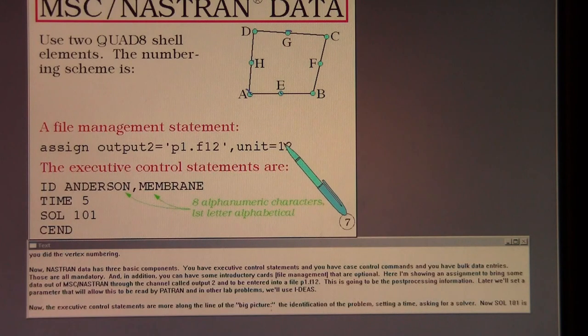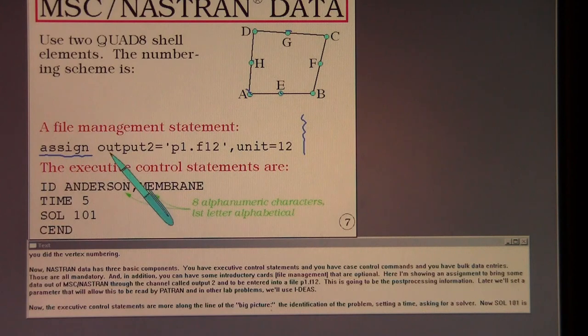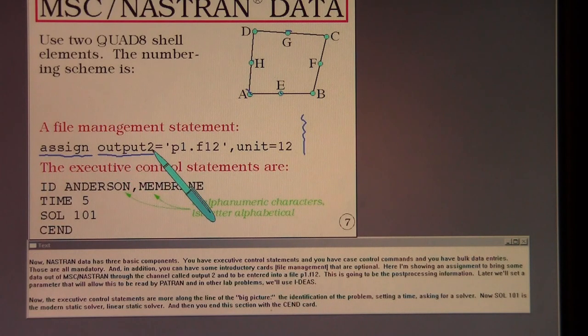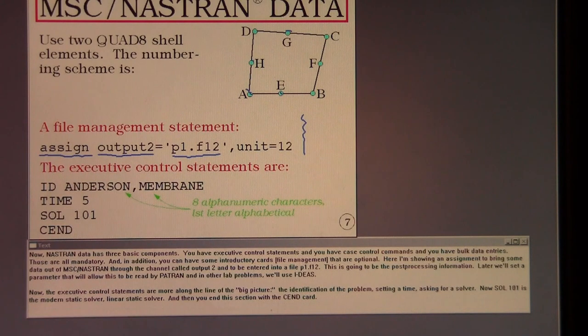Now, Nastran data has three basic components. You have executive control statements, and you have case control commands, and you have bulk data entries. Those are all mandatory. And in addition, you can have some introductory cards that are optional. Here I'm showing an assignment to bring some data out of Nastran through the channel called output two and to be entered into a file p1.f12. This is going to be the post-processing information. Later we'll set a parameter that will allow this to be read by Patran. And in other lab problems we'll use IDEAS.